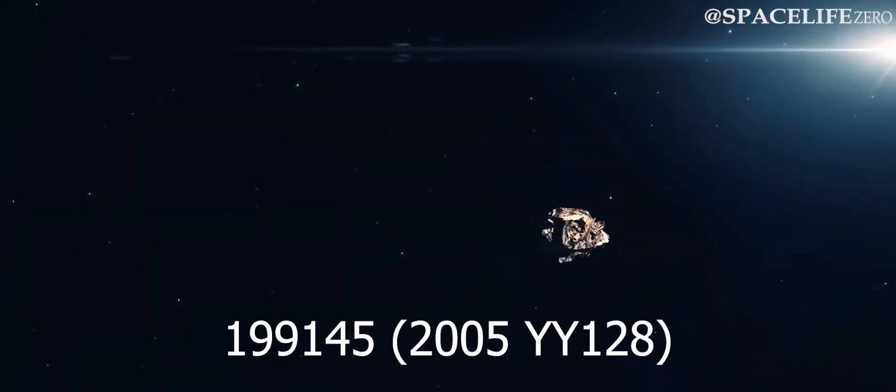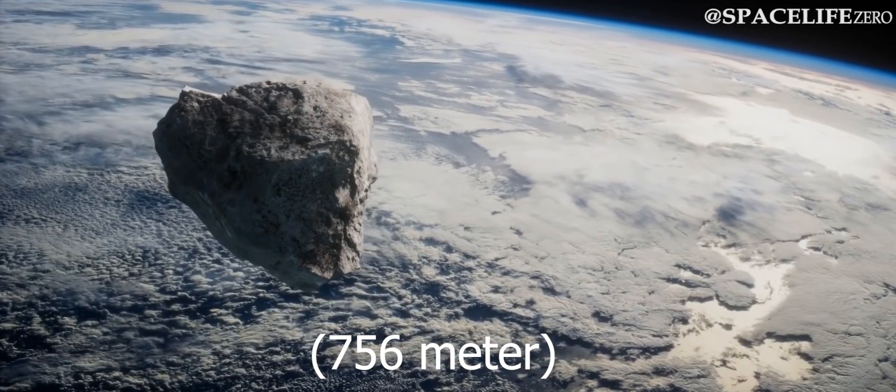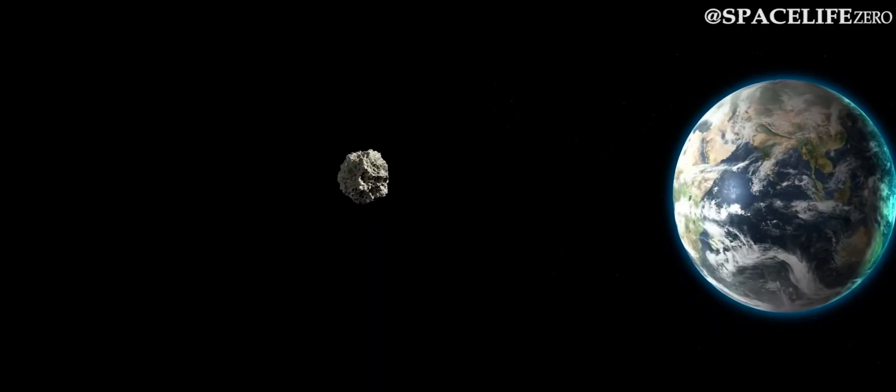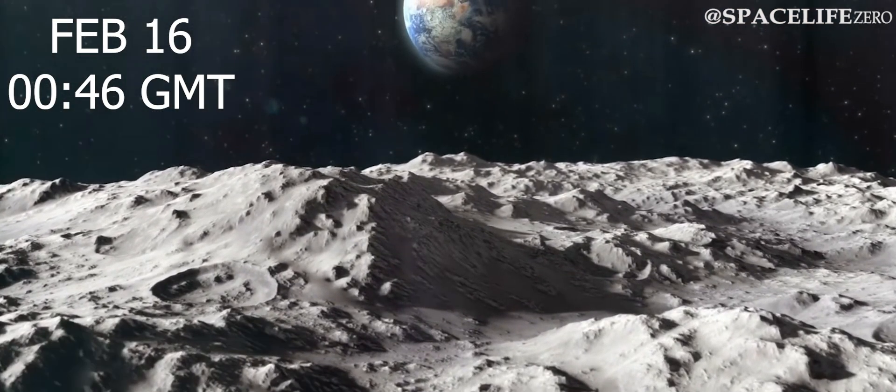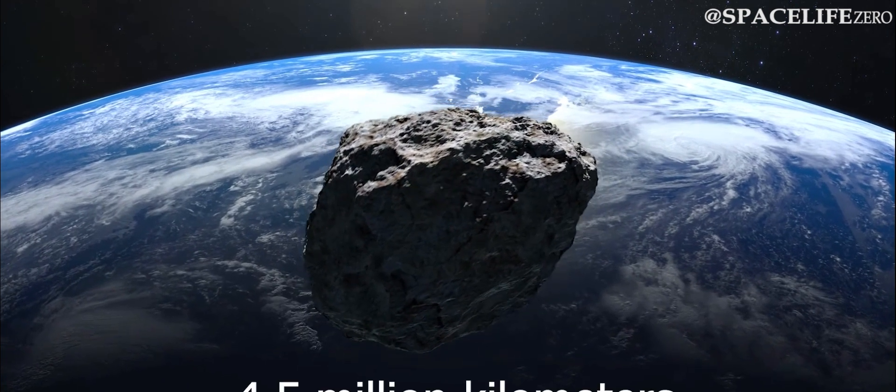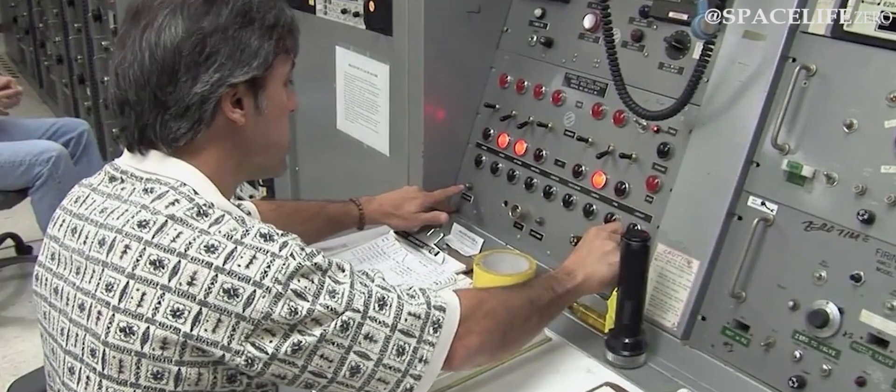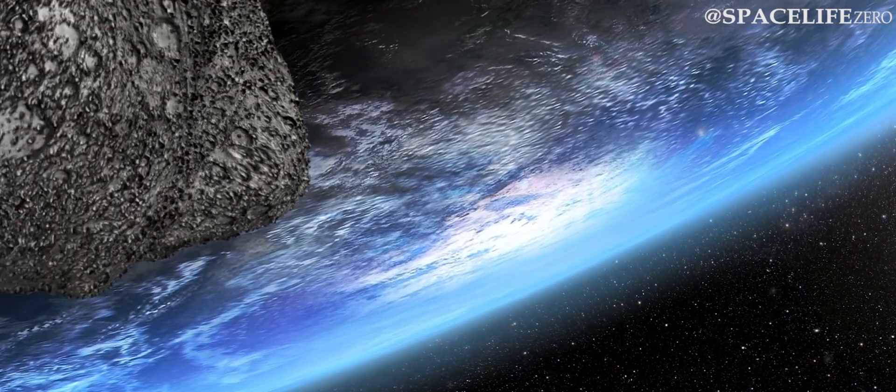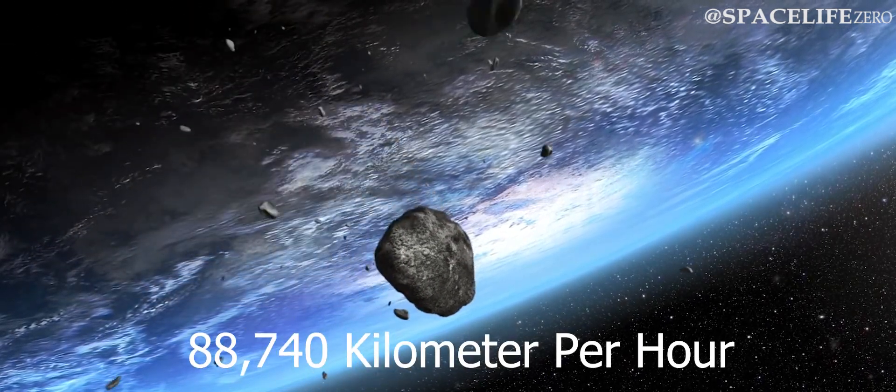Asteroid 2005-YY128. The 756-meter massive asteroid named 2005-YY128 will be making its closest Earth approach on February 16, at 0046 GMT. It will fly past Earth at a distance of 4.5 million kilometers, according to the information provided by NASA's JPL. This massive asteroid is heading towards Earth at a speed of 88,740 km per hour.